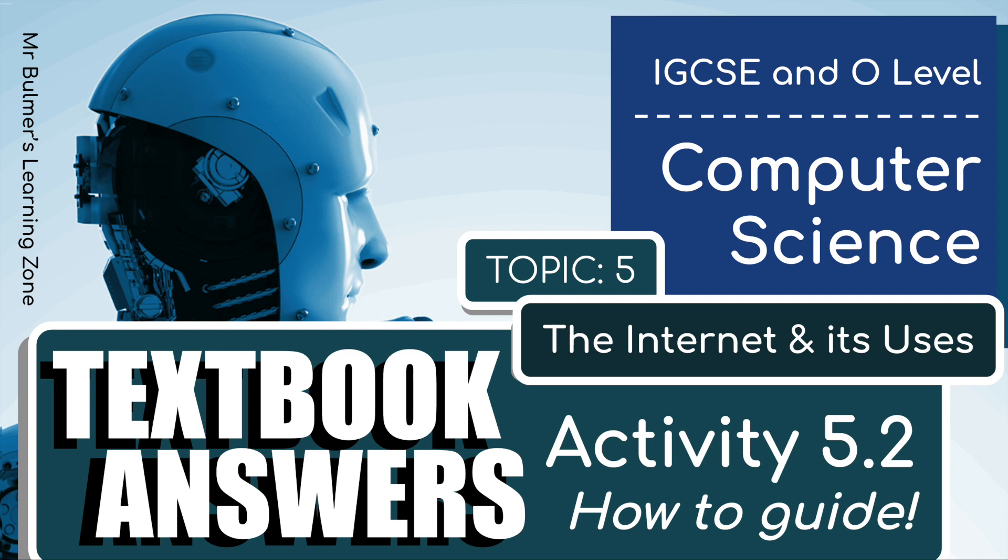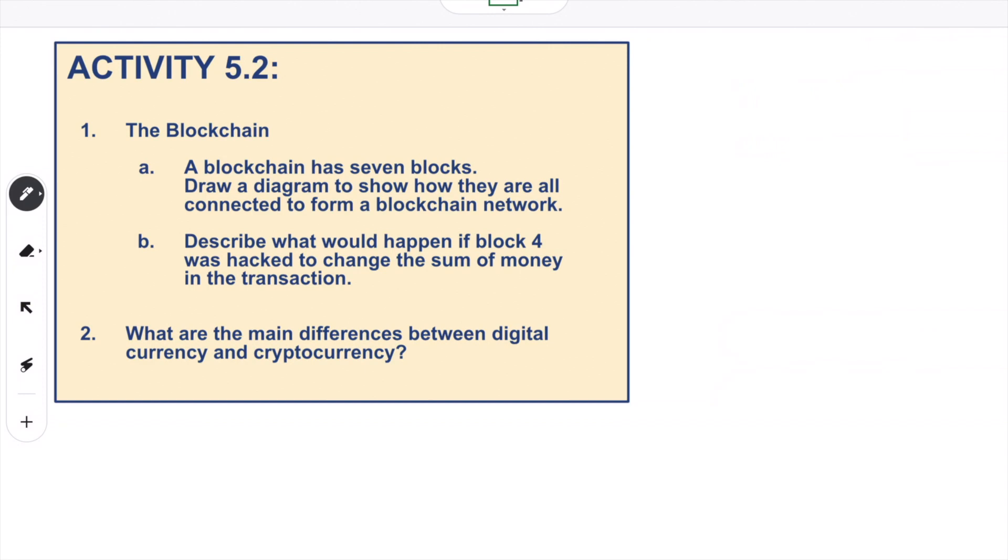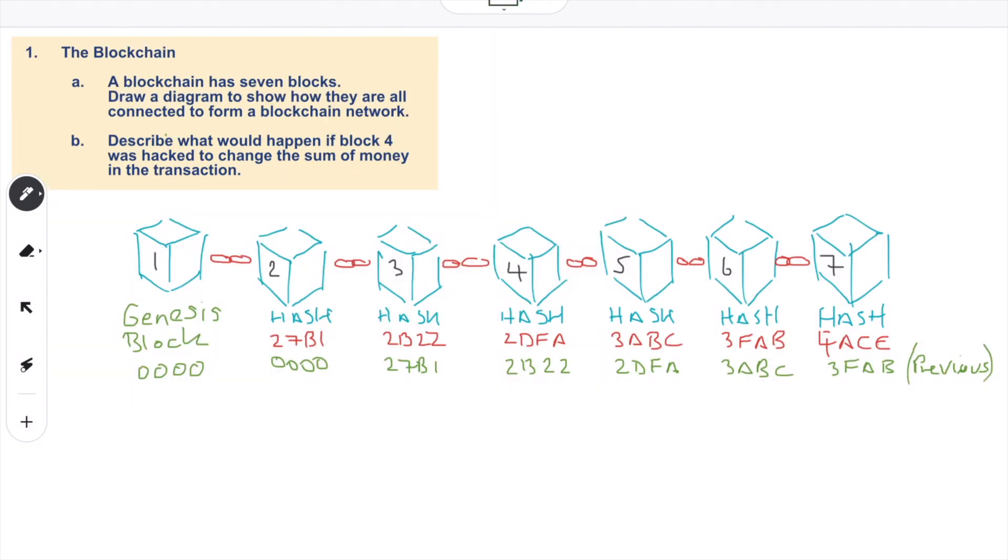Hello and welcome back to Activity 5.2 from Topic 5, The Internet and Its Uses. We're going to be looking at the blockchain. This question on blockchain has seven blocks - draw a diagram to show how they are all connected to form a blockchain network. Then we're going to describe what would happen if block four of this diagram was hacked to change the sum of money in the transaction. And then we move on to question two: what are the main differences between digital currency and cryptocurrency?